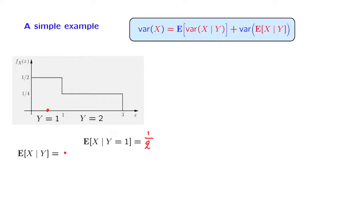This is something that happens when Y is equal to 1. The probability that Y is equal to 1 is the area under the PDF in this range. And since the height of the PDF is 1/2, this probability is 1/2.